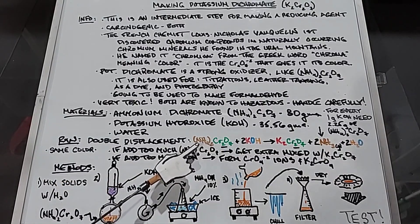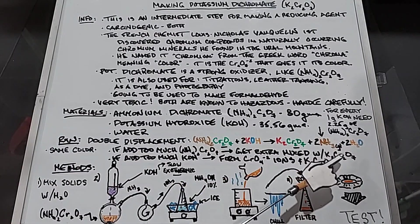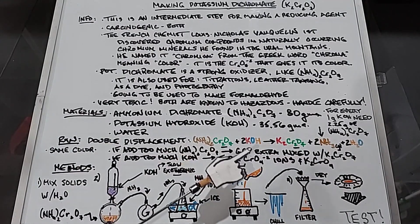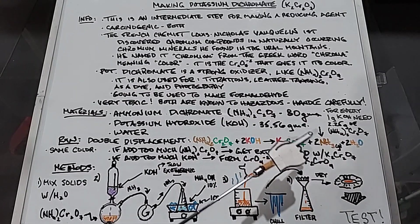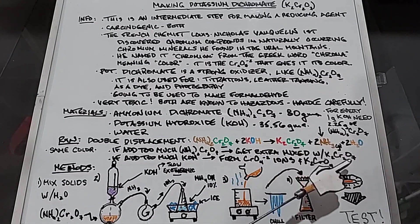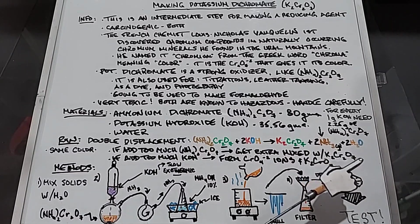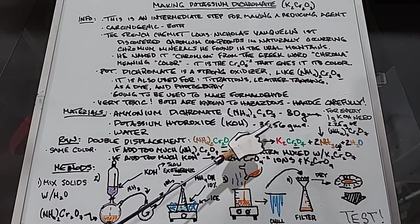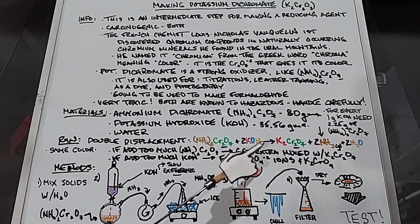If we add too much ammonium dichromate, we'll end up with extra ammonium dichromate mixed with the potassium chromate in the final mixture. If we add too much potassium hydroxide, we'll form the chromate ion and therefore potassium chromate mixed with our potassium dichromate. These measurements of 80 and 35.56 grams are very precise in order to avoid both of these from happening.